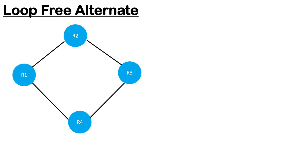Let's get started with the theory first. I'll talk a little bit about the concept of LFA, how it works, and then we'll move to the GNS3 topology where I'll show you the configuration on IOS XR and IOS XC devices. We'll focus on a topology with four routers — R1, R2, R3, R4. If this particular link between R1 and R2 fails, how LFA is going to provide a backup path is what we're going to discuss.